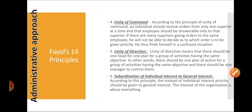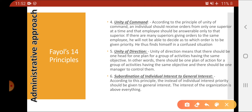The fourth principle is unity of command. Fayol says that an individual should receive orders from one superior only at a time, because if multiple superiors give work to an employee, the employee gets confused and cannot achieve efficiency in their work.